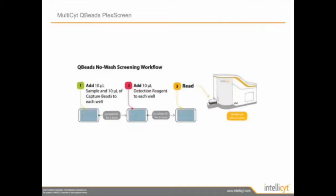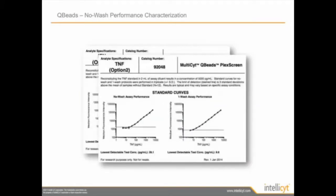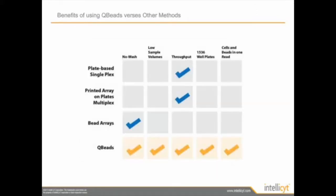The QB protocol is very simple. Our standard no-wash protocol is mixing 10 microliters of sample with 10 microliters of beads, incubating for an hour, then adding 10 microliters of detection reagent. Incubate for two hours and then read on the IQ, which takes about 18 minutes for a 384-well plate. All our analytes are fully characterized. We provide the lowest level of detection for each analyte, comparing a no-wash protocol with a single-wash protocol. You can work with low sample volume, 1536-well plates for further miniaturization, and even mix the beads with cells to create a true multiplex assay.